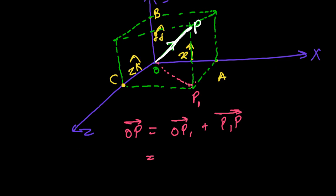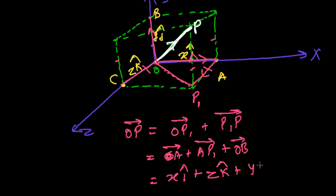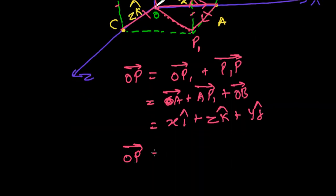According to that, let's put in the values. OP1 can be broken down as OA plus AP1, and P1P — since this is a cube, all these lengths are equal, so P1P is the same as OB. Now, OA has coordinate x î, AP1 equals y ĵ (since it's a cube, this side equals that side), and OB equals y ĵ. Arranging in x, y, z form: OP = x î + y ĵ + z k̂.